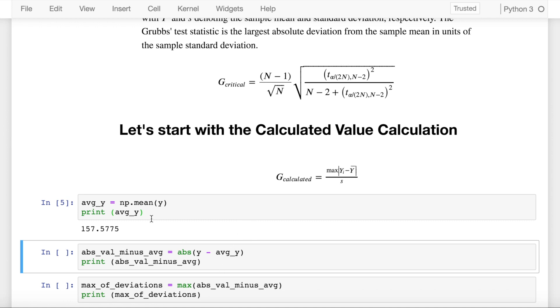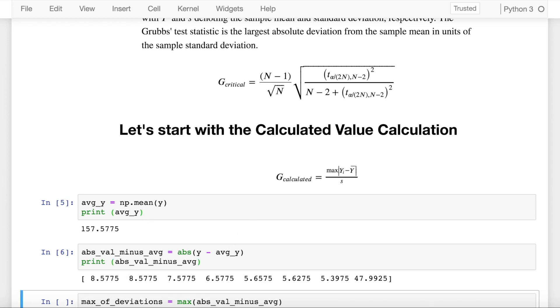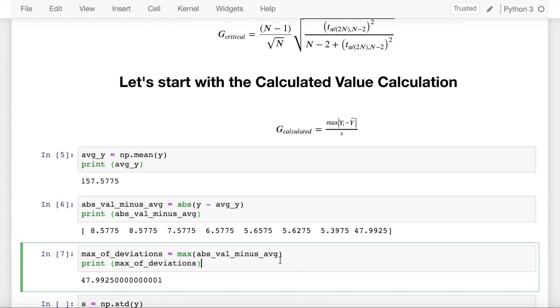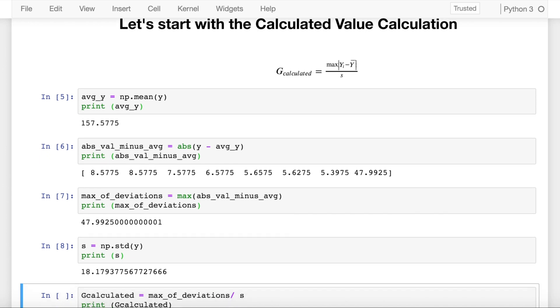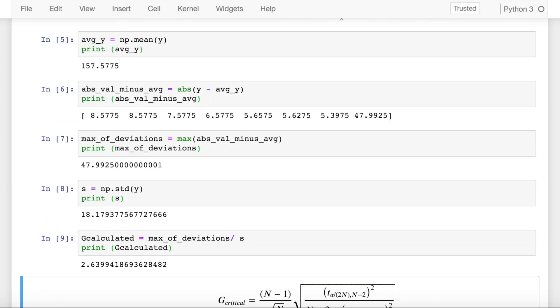Now all the values that I had, I subtract the mean value from them to get a deviation from mean. Now since I have the deviations from the mean, I'll find the maximum of those deviations that are there from the mean value and the denominator shows the standard deviation. So I use numpy.std to find out the standard deviation of my dataset and I calculate the Grubbs test statistic by the ratio of max of deviations which is 47.99 divided by the standard deviation which is 18.17 to get a calculated test statistic for Grubbs test to be equal to 2.63.